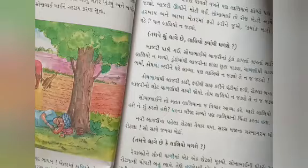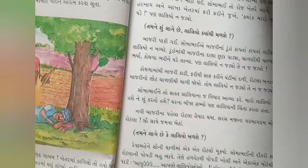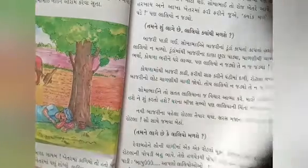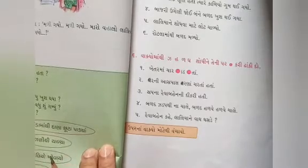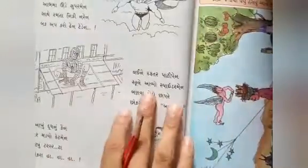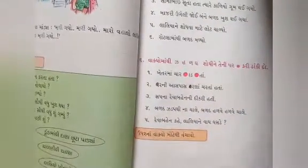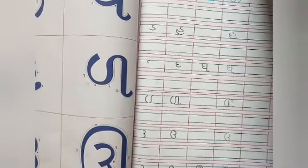એ પછી — ઘંટીમાં પિસાવ્યા, લોટ થઈ ગયો — ત્યારે લાલીઓ મળ્યો. ઘરેથી તમે ગાઓ, મઝા આવશે. અને આ ગીત ગાઓ — રમૂઝ વાળું ગીત છે. Page number 41, 42 અને 43 તમારે ઘરેથી lesson માં પૂરું કરવાનું છે. Okay?